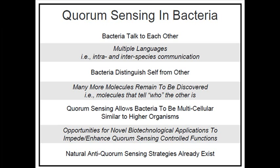Now let's come to the summary. What is quorum sensing in bacteria? In a few words, bacteria talk to each other via chemical signals or chemical messengers — we call it the auto inducer. They have multiple languages; for example, there is intraspecies signaling and interspecies communication.